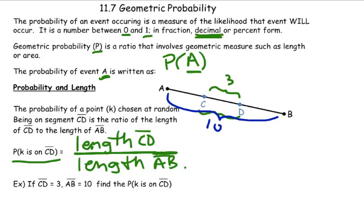Then I want the probability that K is on CD. So the probability, you can rewrite this if you want, is on CD. The probability that that point's gonna be on CD would be the length of CD over the length of the whole segment, AB, which is 10.